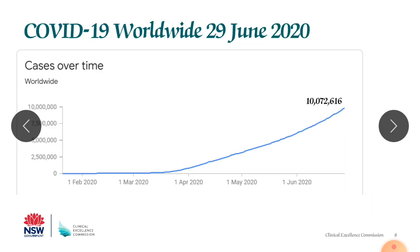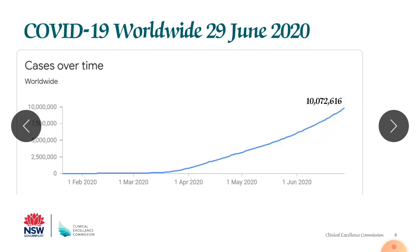Looking at COVID-19 worldwide data up to June 29th, 2020, the graph has been on an inclined trajectory and continues to rise.